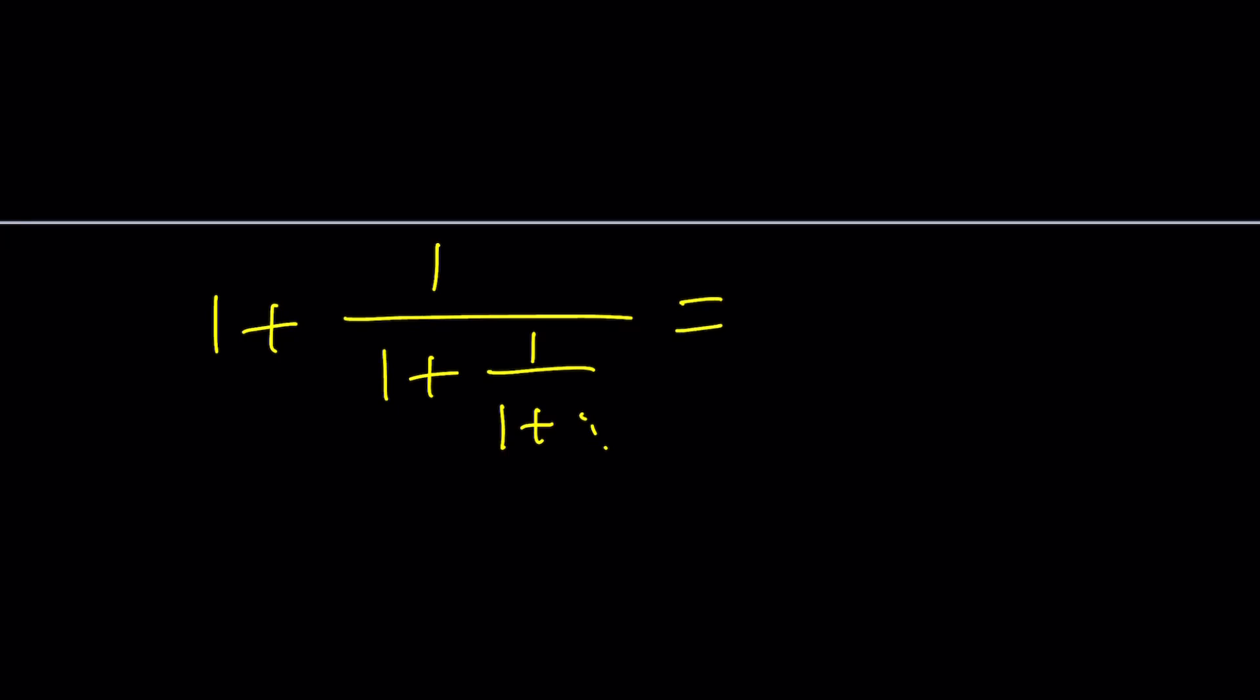then we would get 1 plus 1 over 1 plus 1 over so on and so forth. And this is equal to 1 plus root 5 over 2, and that could be defined as the golden